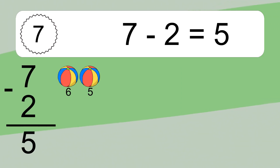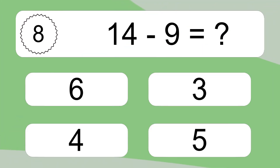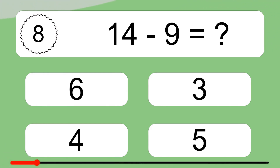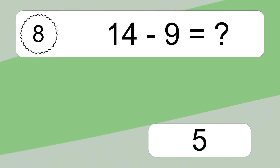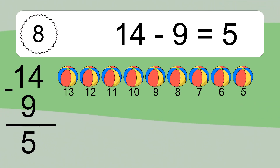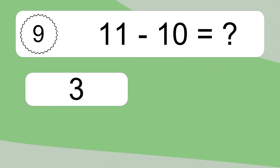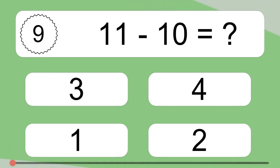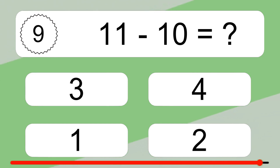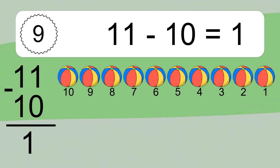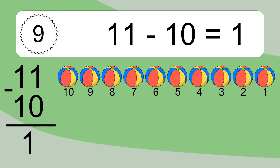7 minus 2 equals 5. Let's count it: 6, 5. 14 minus 9 equals what? 14 minus 9 equals 5. Let's count it: 13, 12, 11, 10, 9, 8, 7, 6, 5. 11 minus 10 equals what?